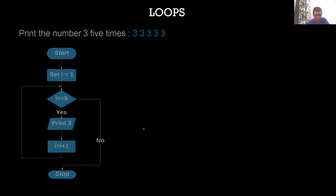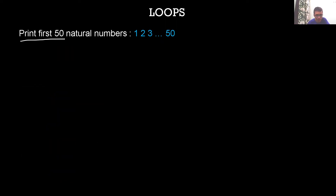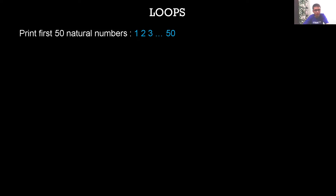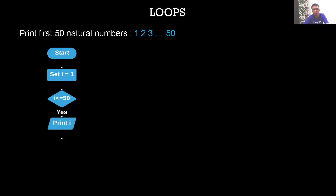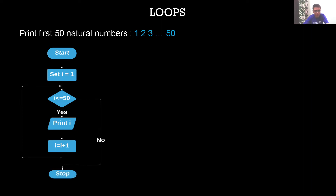Moving on — we have to print the first 50 natural numbers. Try drawing a flowchart on your own first, then check. The solution is simple: initialize i = 1, condition i ≤ 50, print i, update i = i + 1, go back. If the condition is false, stop. This will print 1, 2, 3, and so on till 50.